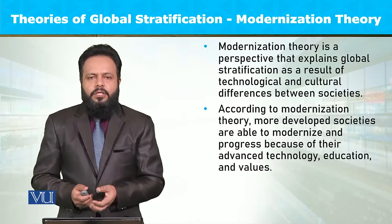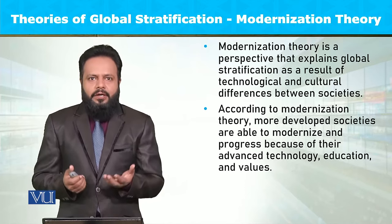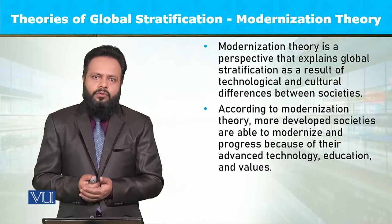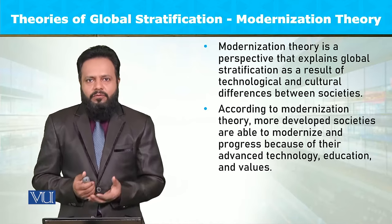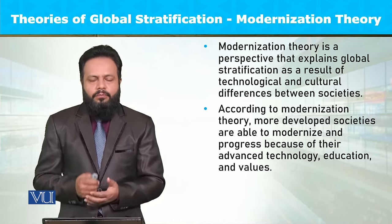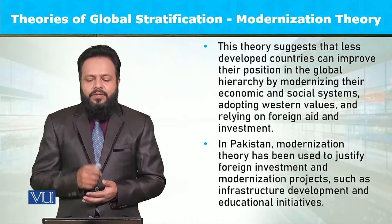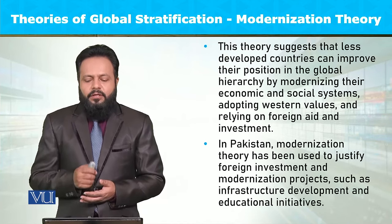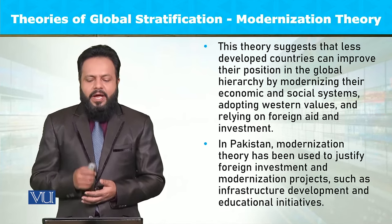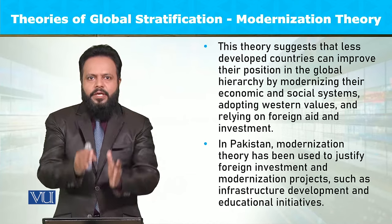A modern society becomes modern only when it has advanced technology, facilities of higher education, its people are more educated, and along with this, a modern attitude is present — an environment exists to inculcate and absorb modern values within that society. This theory suggests that less developed countries can improve their position in the global hierarchy by modernizing their economic and social systems, adopting western values, and relying on foreign aid and investment.